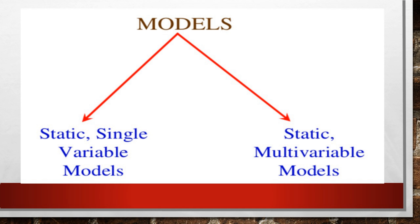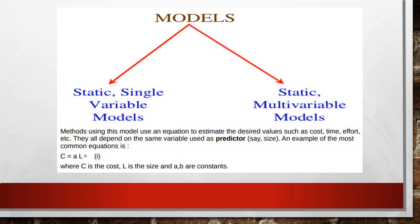The static single variable model approach was proposed by the Software Engineering Laboratory (SEL) of University of Maryland. The static multivariable model was developed by Watson-Felix at IBM. In both models, an equation is used to estimate desired values such as project cost, estimated time, or project effort. All estimation depends on the same variable used as a predictor — for example, lines of code size or function point size.